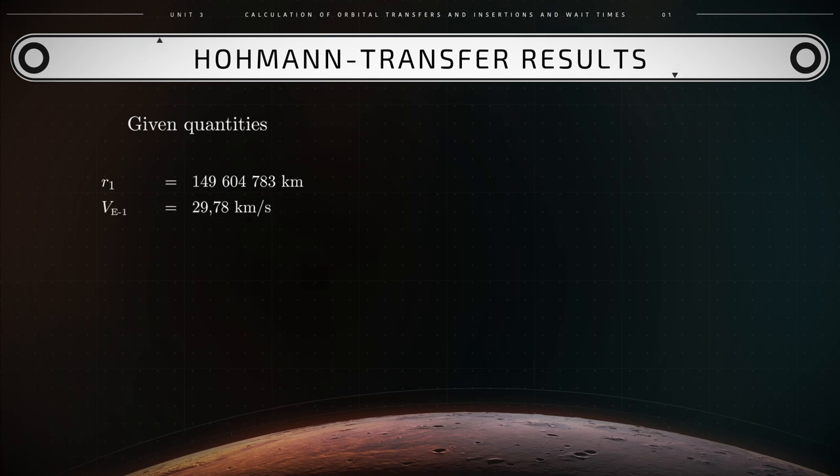R1 equals 149,604,783 km. VE1 equals 29.78 km per second, and this VE1 is the velocity of Earth at position 1. R2 equals 227,952,390 km. And VM2 equals 24.13 km per second, where VM2 signifies the velocity of Mars at position 2.